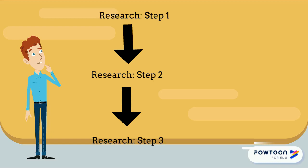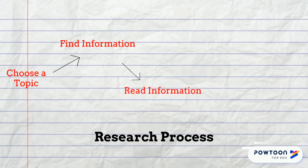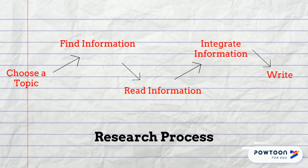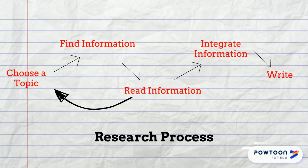There are certain steps, such as choosing a topic, finding the information, reading the information, synthesizing or integrating the information into a paper, and writing a final draft. But really, as you read information, your topic or research question might change. You might find information that doesn't get read, and you will read information that you don't use. And as you read, you will return to searching.